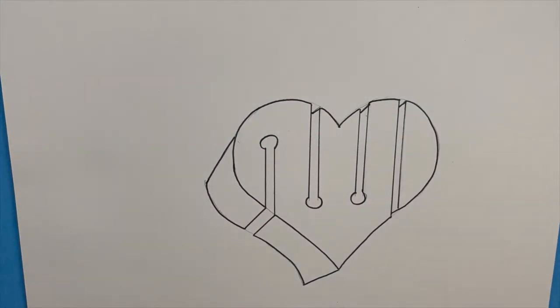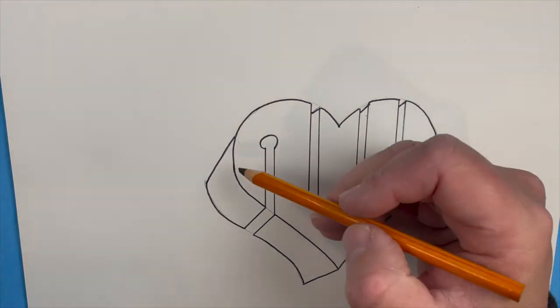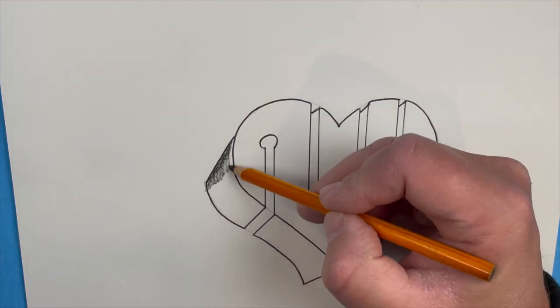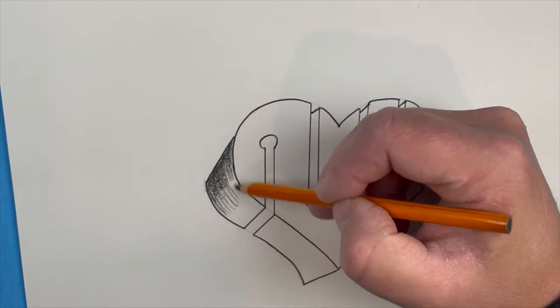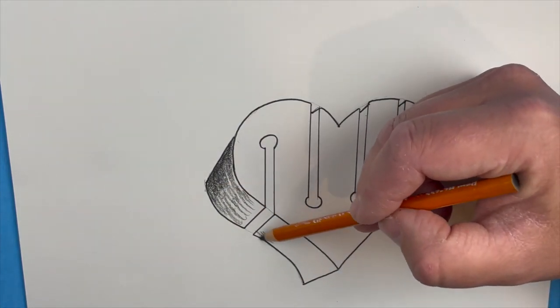Once you go back and you're happy with what you did, then you can go over it with a permanent dark marker. So there's the basic shape right there. The next thing we're going to do is start our shading. This is one of the most important parts of the drawing because this is where it's really going to look like it's coming off the paper.